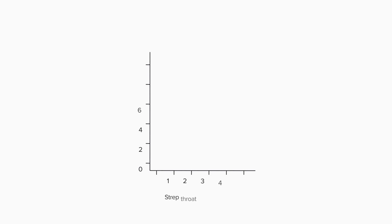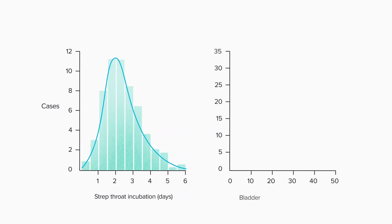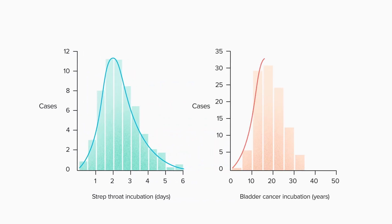In the medical field, we see log normal distributions in disease progression. Here's the incubation time for strep throat, the number of days between exposure to a pathogen and the onset of symptoms. Here's the incubation time for bladder cancer, the number of years following exposure to a carcinogen. Two completely different diseases. Incubation in days or in years, but the same long tail. One more example.